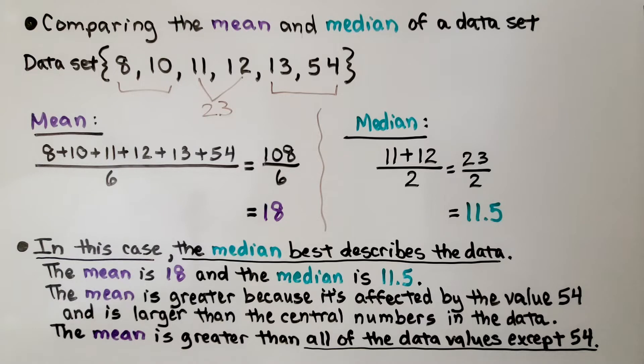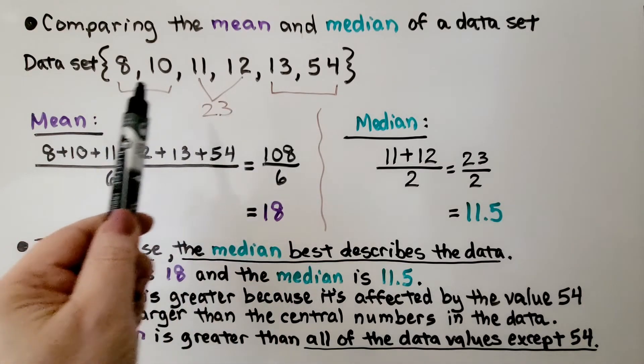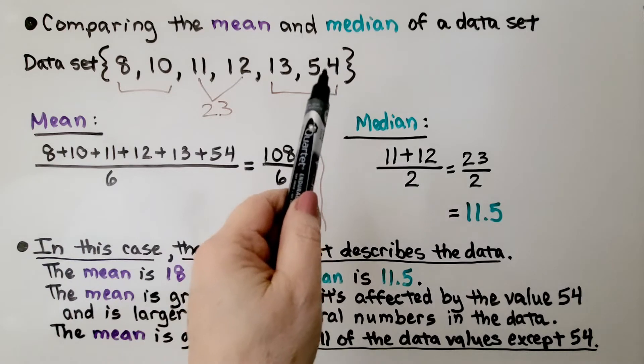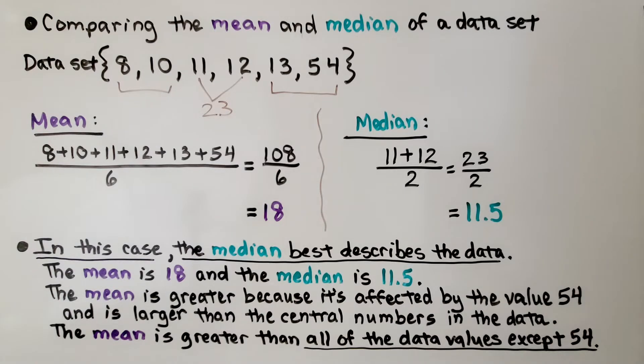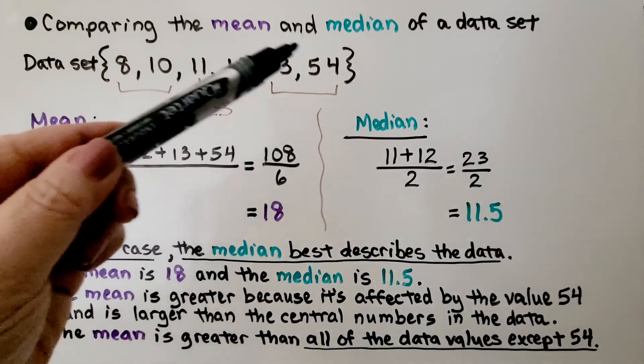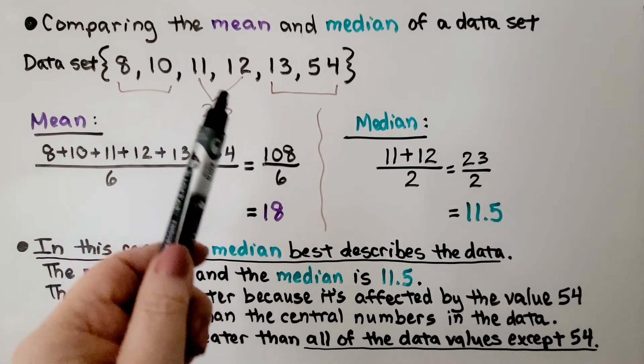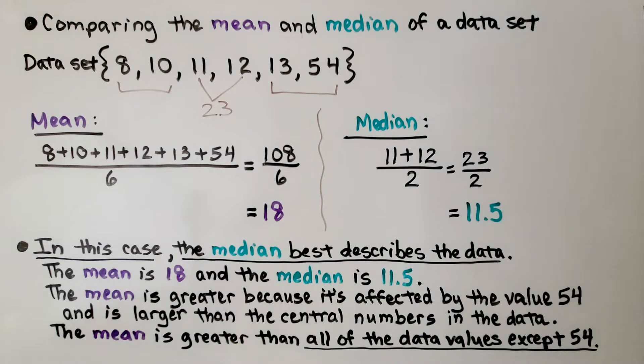Now in this case, the median best describes the data. If you look at these numbers, they're all around 11 or 11 and a half. It's this 54 that's way larger than the other numbers. So the median best describes the data, 11 and a half. The mean is 18 and the median is 11 and a half. The mean is greater because it's affected by the value of that 54 and is larger than the central numbers in the data. This mean is greater than all of the data values except 54. So in this case, the data set is best described by the median.